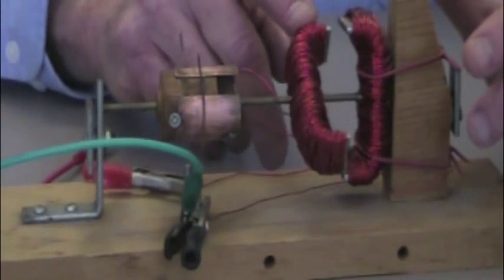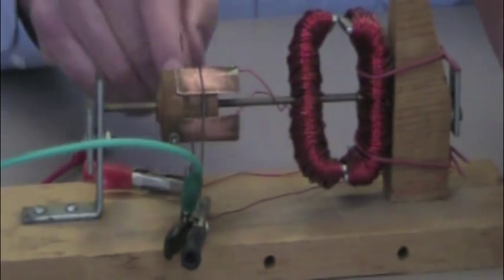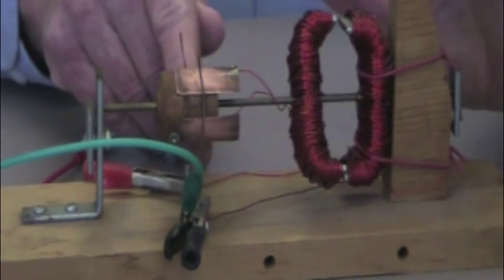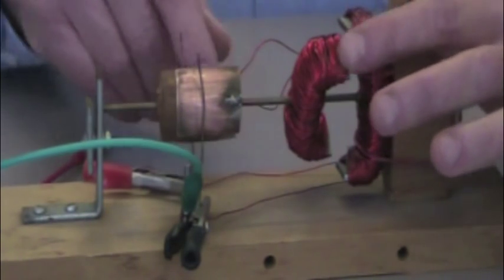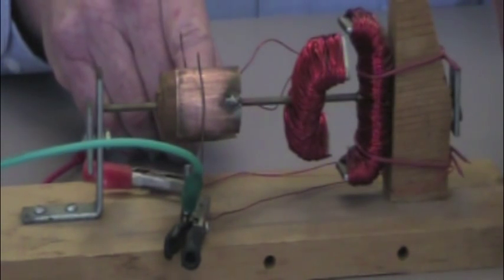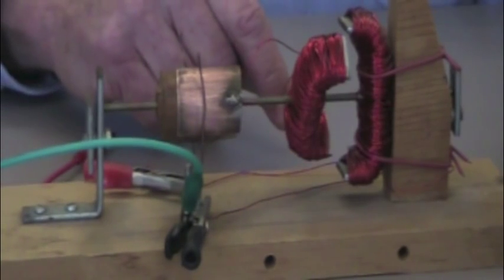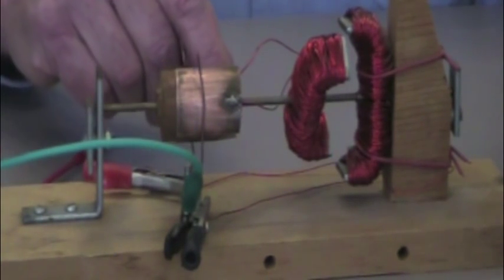It keeps going. Again you get to the commutator interrupting the flow of current, momentum keeps the armature rotating, and now you make contact again. So that's the elements of a simple electric motor.